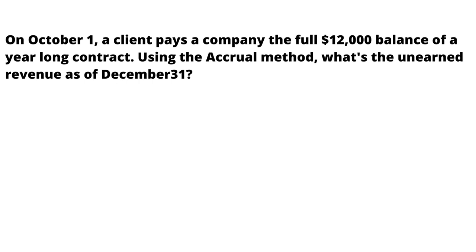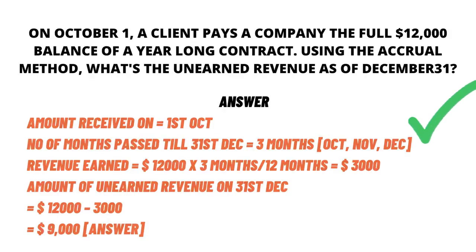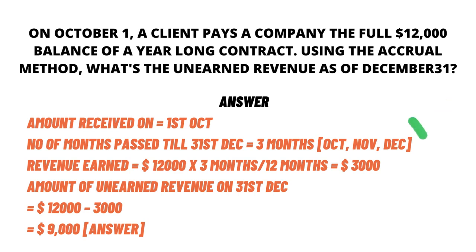Firstly, we have to look at the dates. The contract is given on 1st October, so we have three months: October, November, December — three months. The amount received on 1st October. The number of months passed till 31st December is three months. So the amount earned is $12,000 multiplied by three months divided by 12, which is $3,000. The amount of unearned revenue is $12,000 minus $3,000 equal to $9,000.